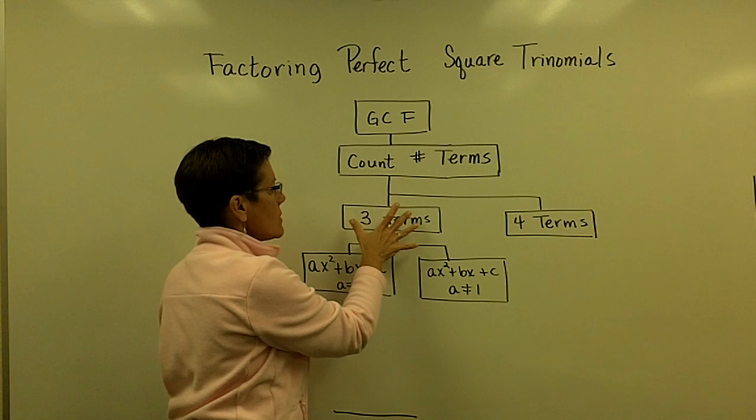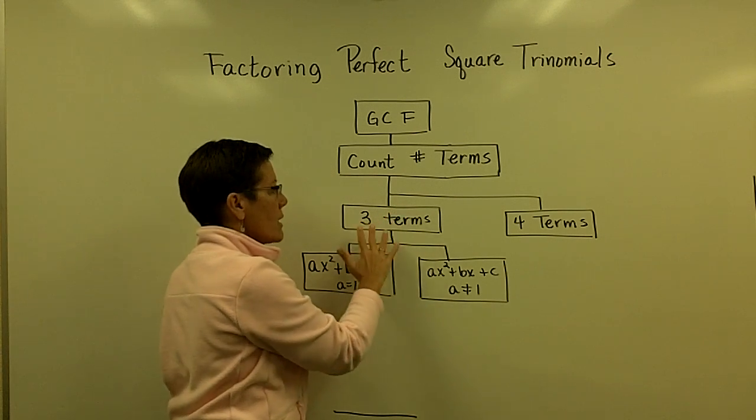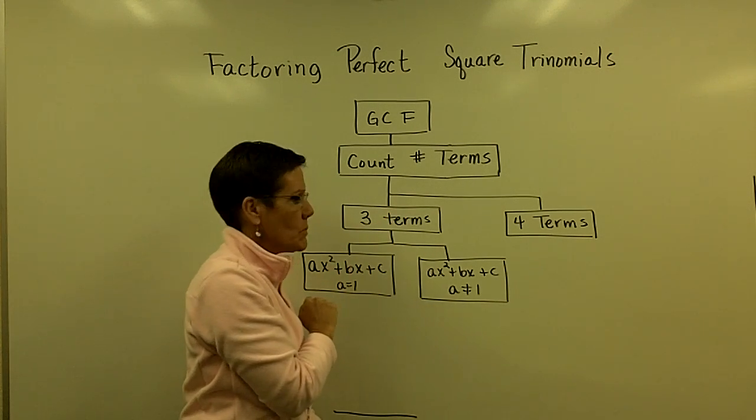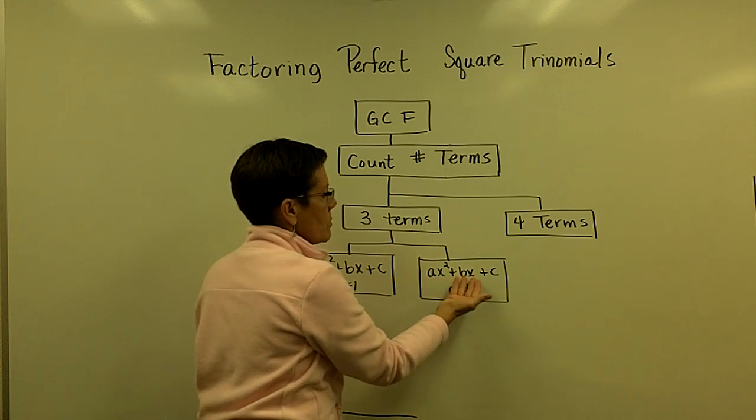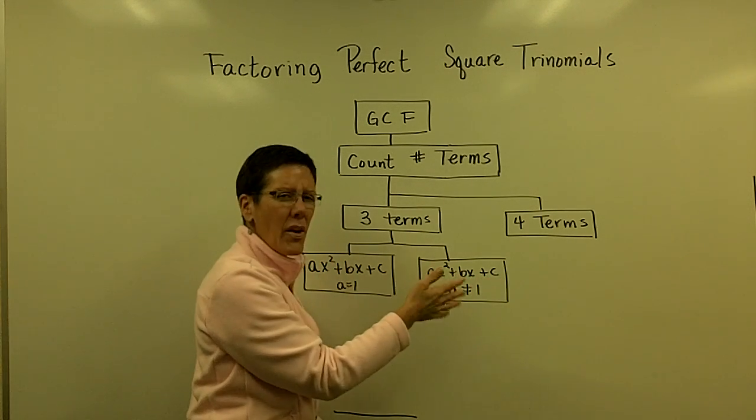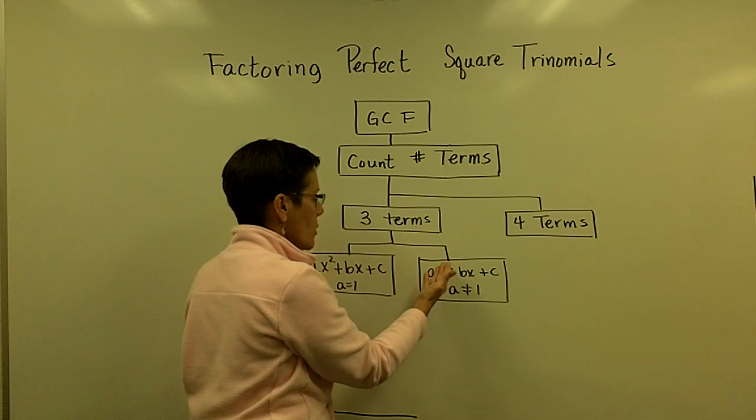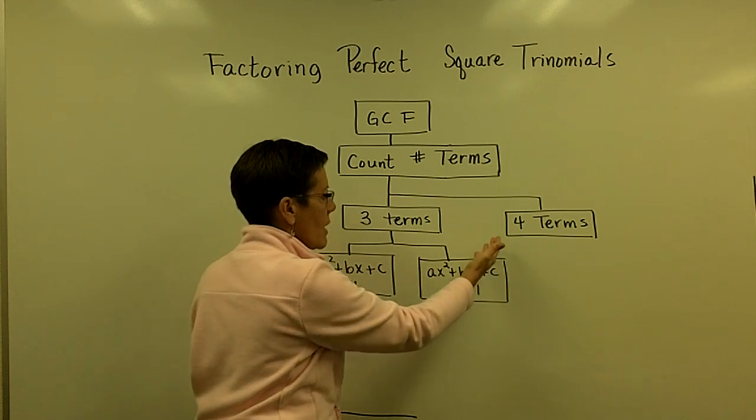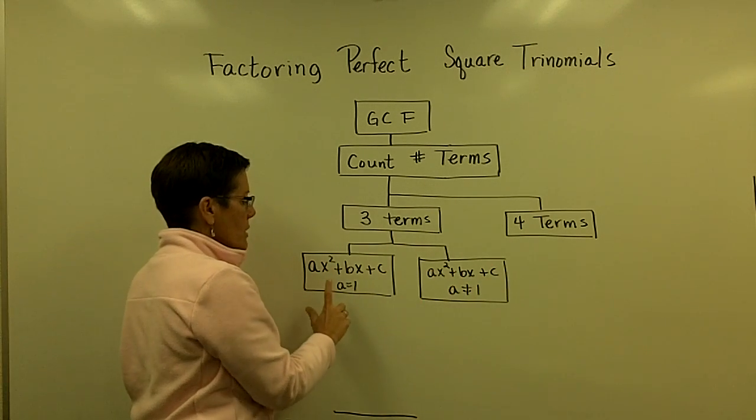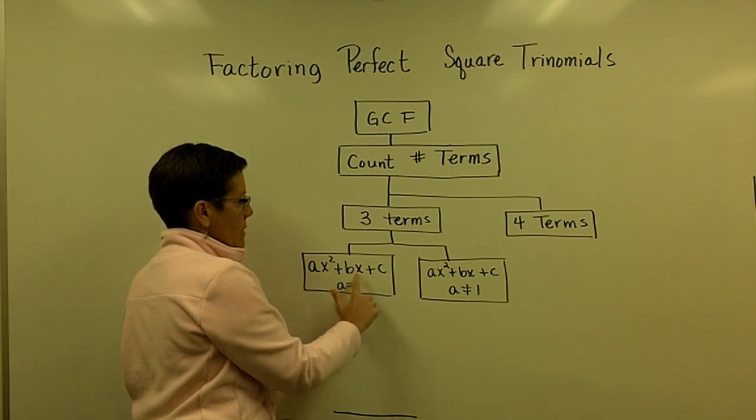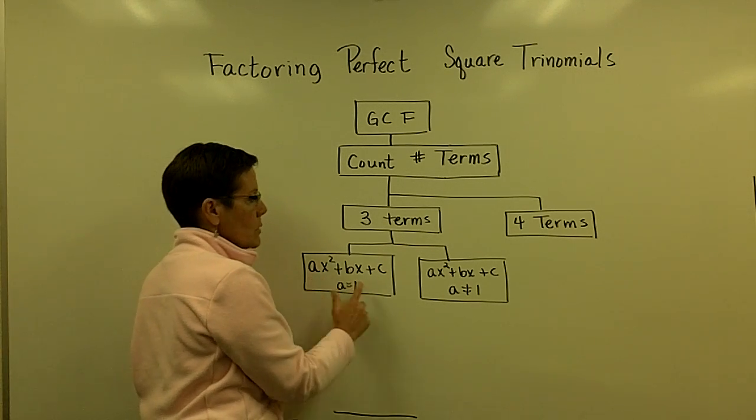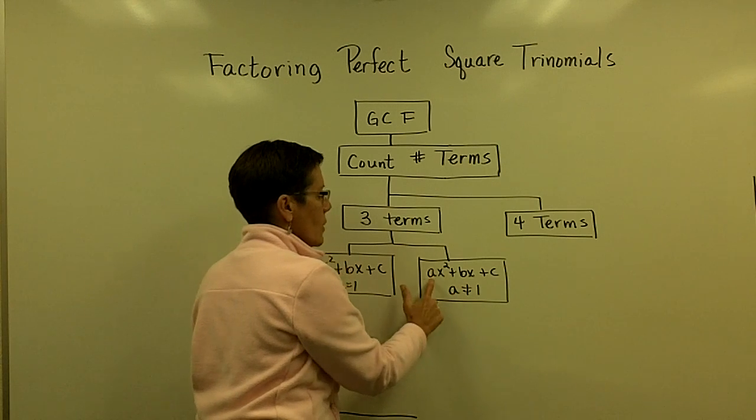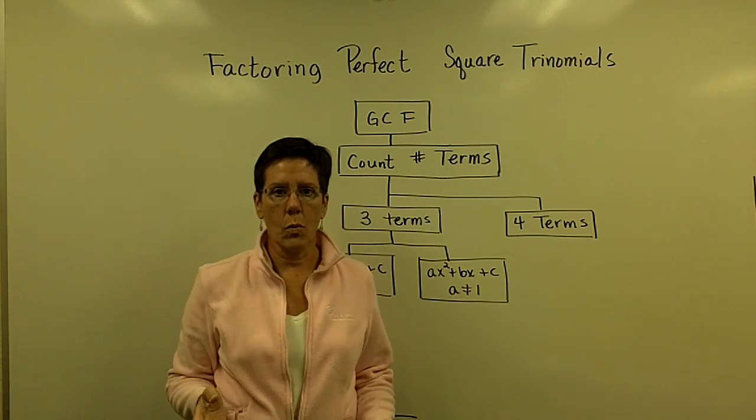Our most recent segment of videos was focusing on polynomials that are in three terms. In other words, there's an x squared term, an x term, and a constant, although that varied. The big thing here was that in some of those trinomials, our a value, our coefficient of our x squared term, was equal to 1, and in others, our a value was not equal to 1.